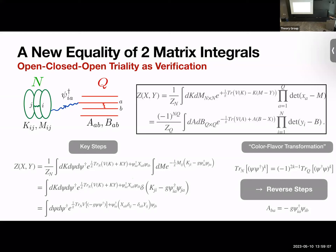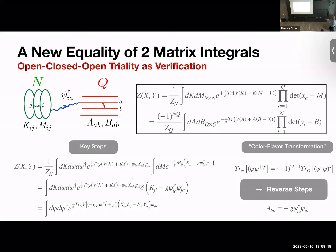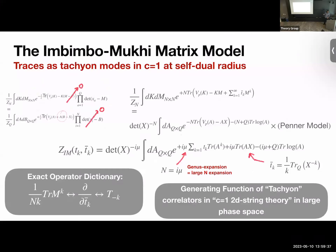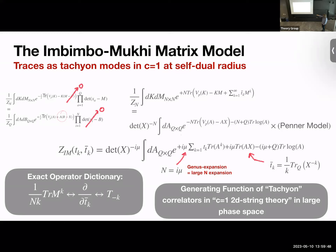One useful thing to note is that once we write determinants in terms of fermions, we get a Yukawa coupling between the matrix and the fermions. Now, on the second slide, we specialize by setting the Y variable to zero. We write det as e to the trace log and expand, which generates some potential with coefficients t_k. Using the second line, we note that the coupling only appears as a product of the two matrices, and a change of variables splits this into a product of two one-matrix integrals.